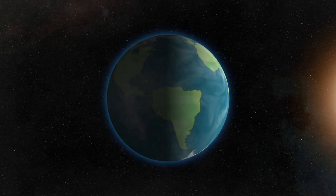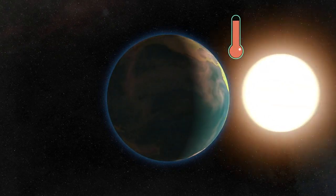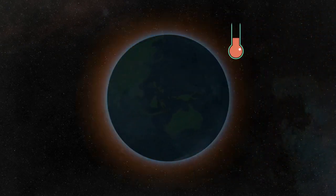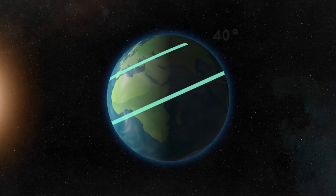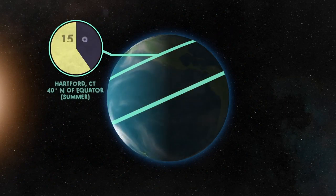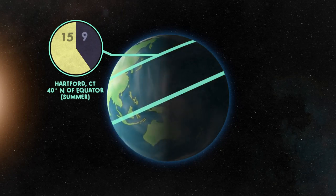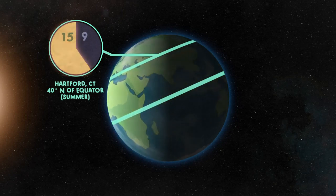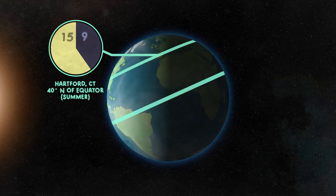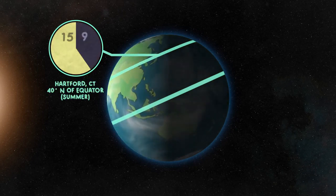So when the Sun is shining on the Earth, it warms up. After the Sun sets, it has time to cool down. So in the summer, any location that's about 40 degrees north of the equator, like Hartford, Connecticut, will get 15 hours of daylight each day and nine hours of darkness. It warms up for longer than it cools. This happens day after day, so there's an overall warming effect. Remember this fact for later.